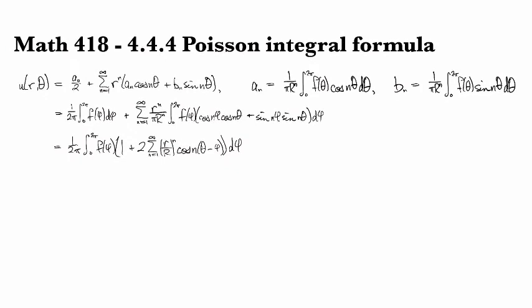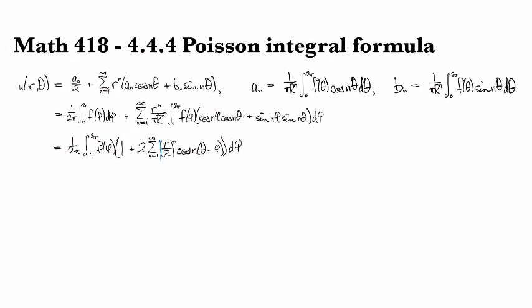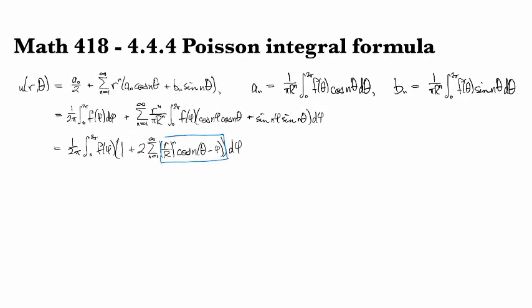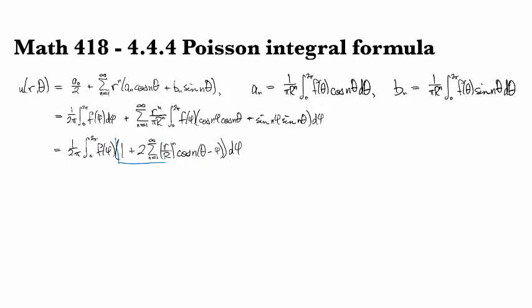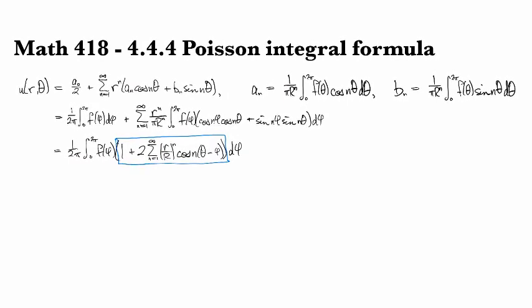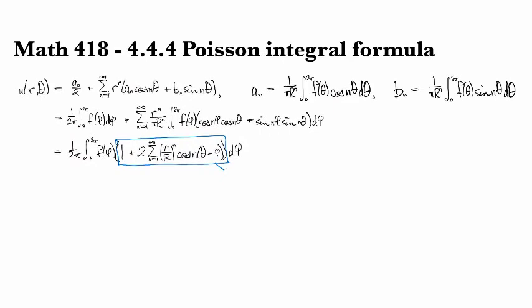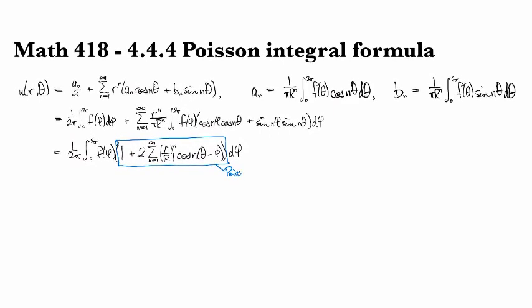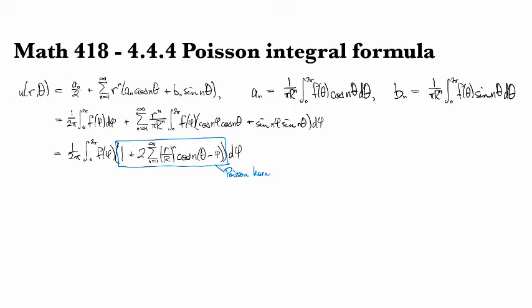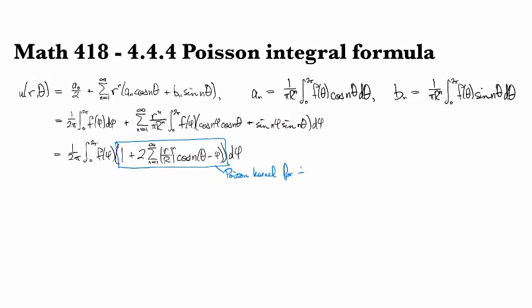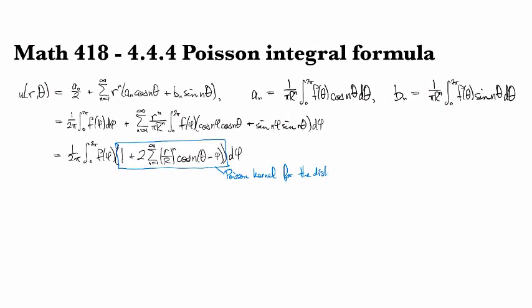And so we can take exactly this portion right here as our Poisson kernel for the disk.